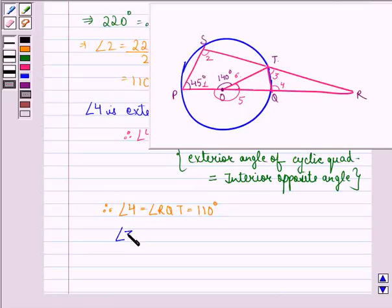Similarly, angle 3 equals angle 1. Angle 3 is angle RTQ, which equals 45 degrees.